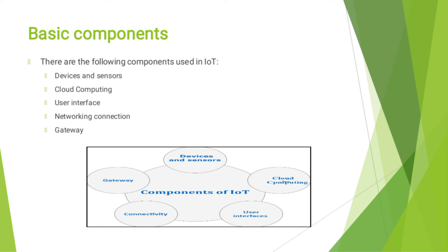The next topic is Basic Components. The basic components of Internet of Things are: Devices and Sensors, Cloud Connectivity, User Interface, Network Connection, and Gateway.